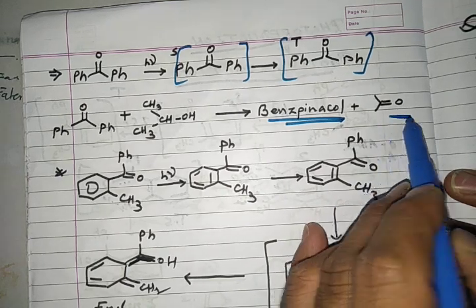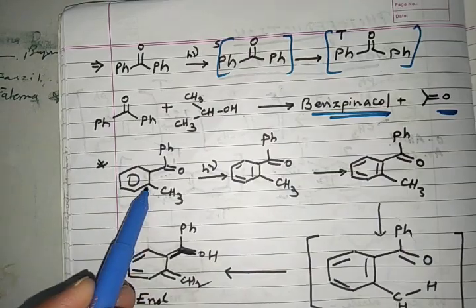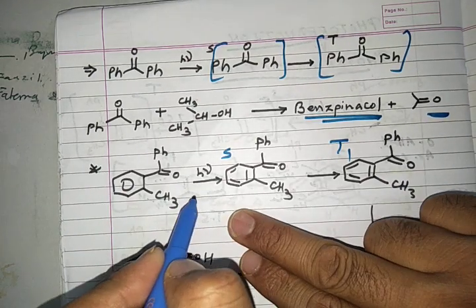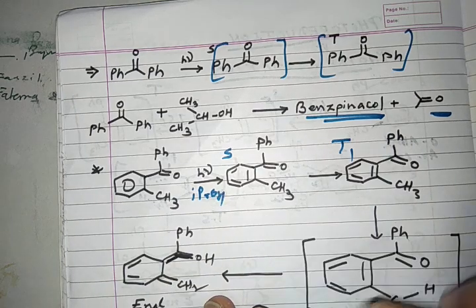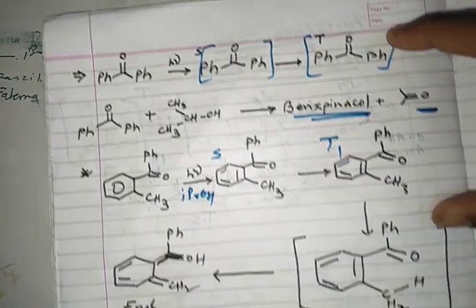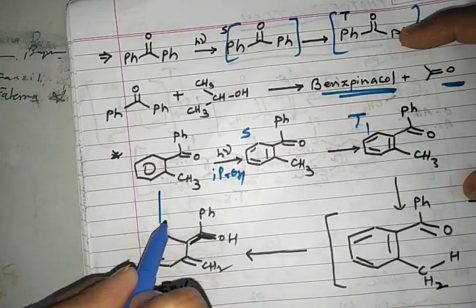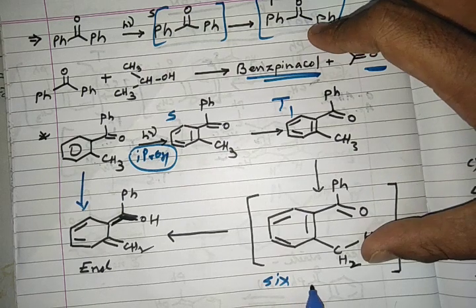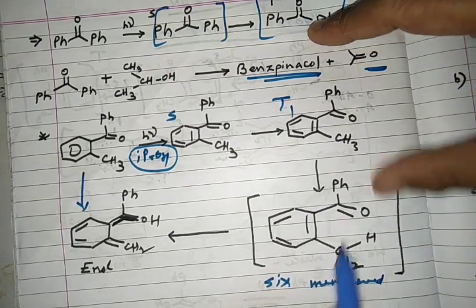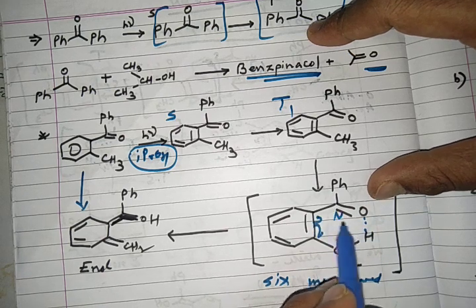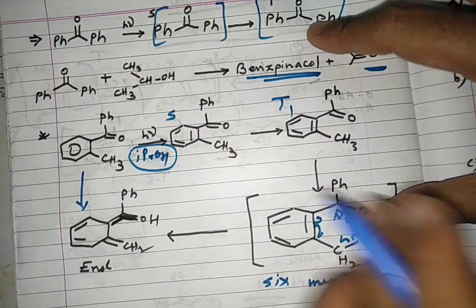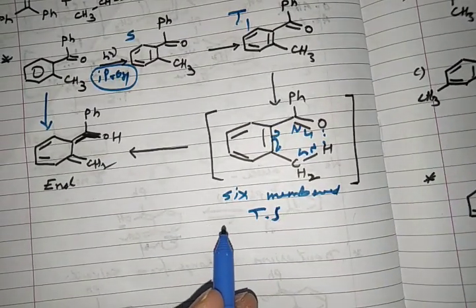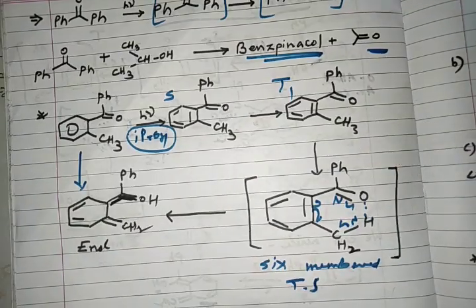When the ortho position of benzophenone is methylated, it absorbs light, forming a singlet state and then a triplet state. Even in the presence of isopropanol as a hydrogen donor, photo reduction does not proceed. Instead, photoenolization occurs because a six-membered, very stable transition state forms — bond breakages occur in this ring — and this six-membered transition state strongly favors photoenolization over photo reduction.